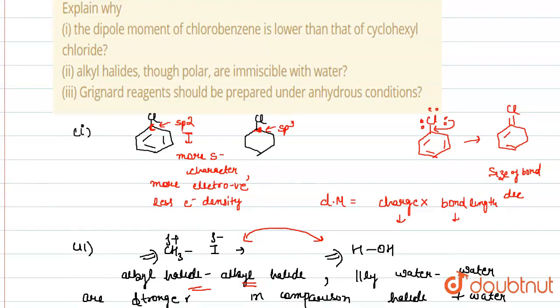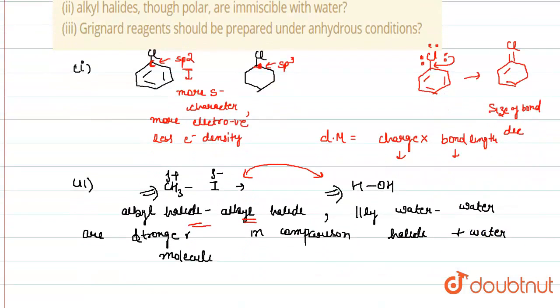Next part is, Grignard reagent should be prepared under anhydrous condition. The reason for that is, Grignard reagent should be used in anhydrous condition because if we take a Grignard reagent like CH3-Mg-Br,